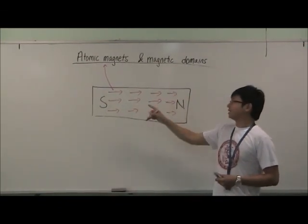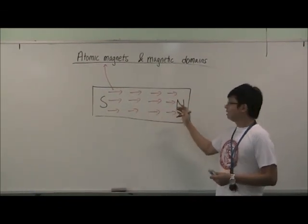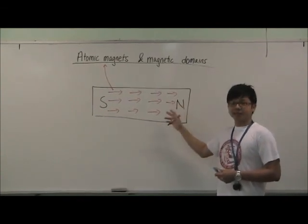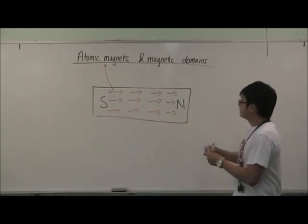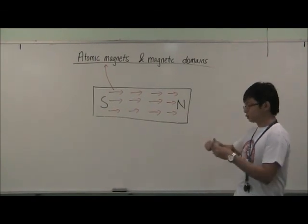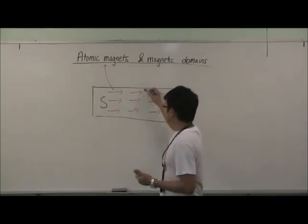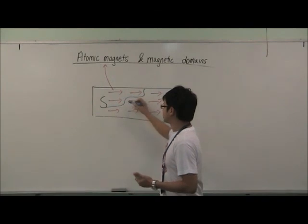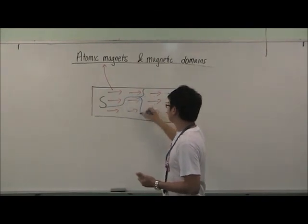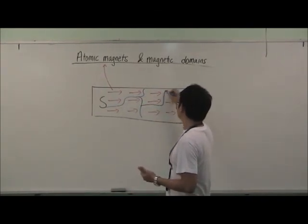So if all the atomic magnets are pointing in the same direction, that will make this piece of metal a magnet. And these atomic magnets, they usually exist in a group and they will all point in the same direction, like how I'm dividing them.